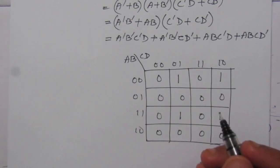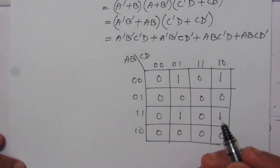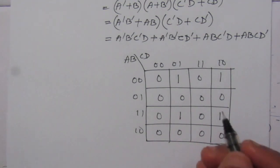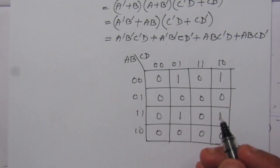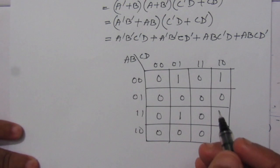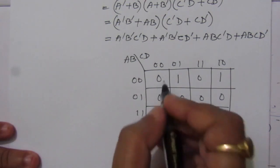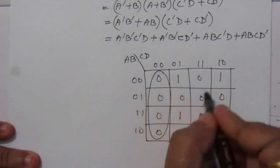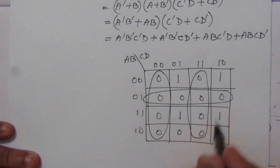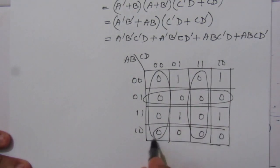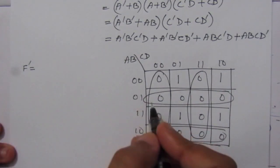Now, when we are asked to draw a logic diagram using NOR gates or NAND gates — i.e., inverted gates — we consider the zero values and find the complement function F', and from that find F. This makes it easier to draw the simplified logic diagram. From the K-map we combine the zero groups.